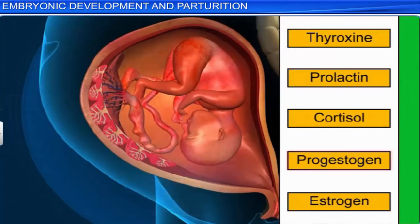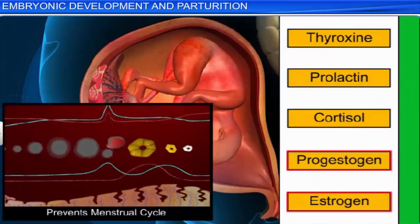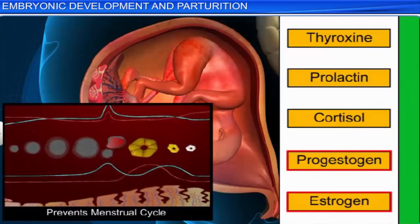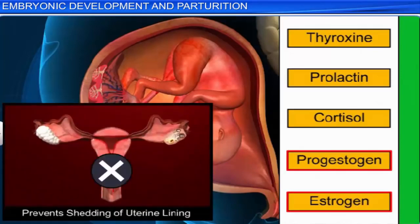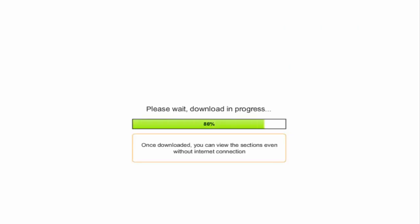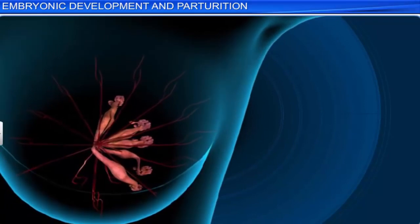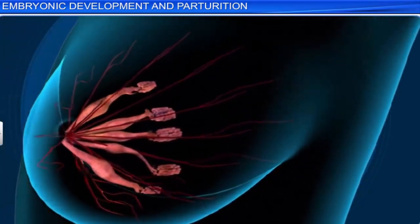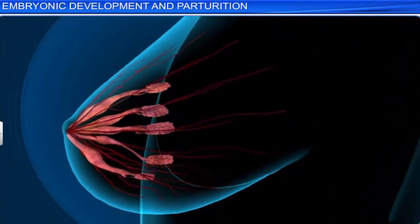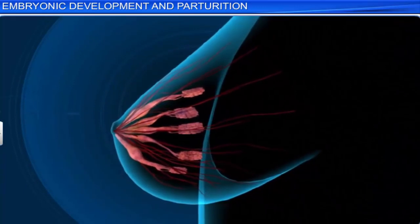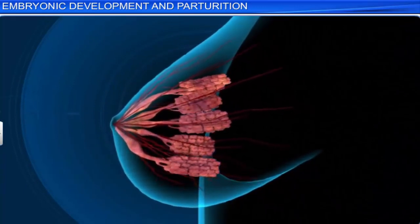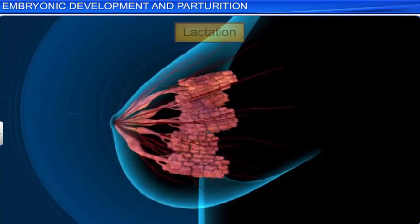Increased levels of progestogen and estrogen, for instance, put the menstrual cycle on hold and prevent the shedding of the uterine lining, which is embedded with the developing fetus. Hormonal changes also cause the cells of the mother's mammary glands to differentiate, resulting in these glands producing milk by a process called lactation, towards the end of pregnancy.